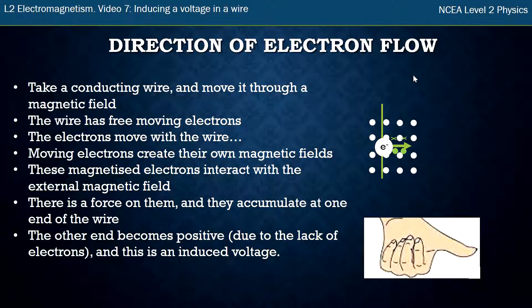Now this electron, now that I've seen what the field is around it, I can see how it interacts with the external magnetic field. And I know that opposites attract. The opposites are above the electron. So the electron is forced upwards.